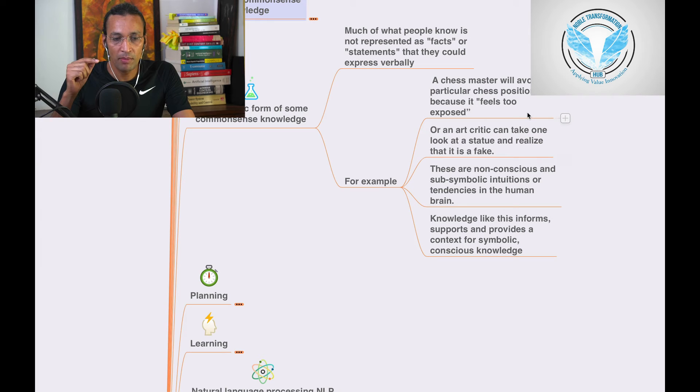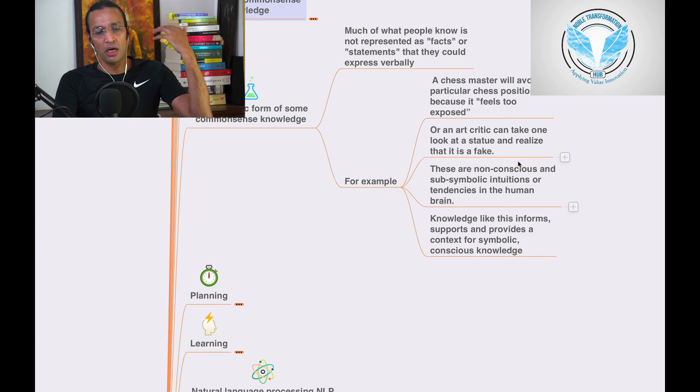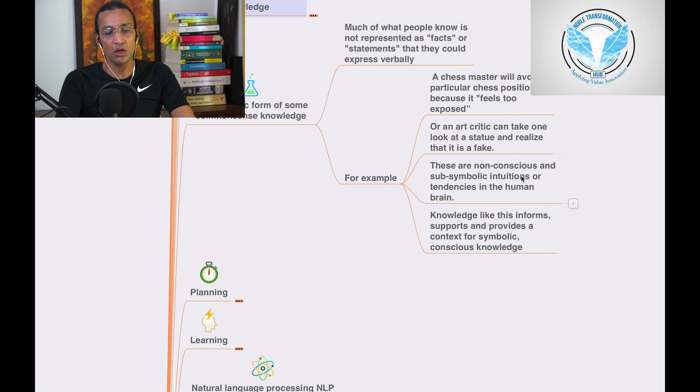A master, when a master avoids the positioning, he feels like there is an opposing thing. The other person might take this step and I might lose in the long term. Or, an art critic can take one look at a statue and realize that it is a fake.